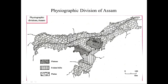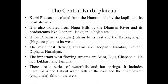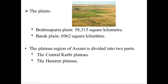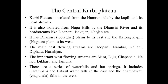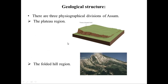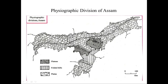The Central Karbi Plateau is dissected from the Amaran Plateau or East Karbi Plateau by the Kopili River and its head streams. It is also isolated from the Naga Hills by the Dhansiri River and its head streams like Deopani, Bokajan, and Naojan. The Dhansiri River flows through Golaghat District. The Central Karbi Plateau has Dhansiri or Golaghat Plains to its East and Kolong-Kopili with Nagaon Plains to its West.